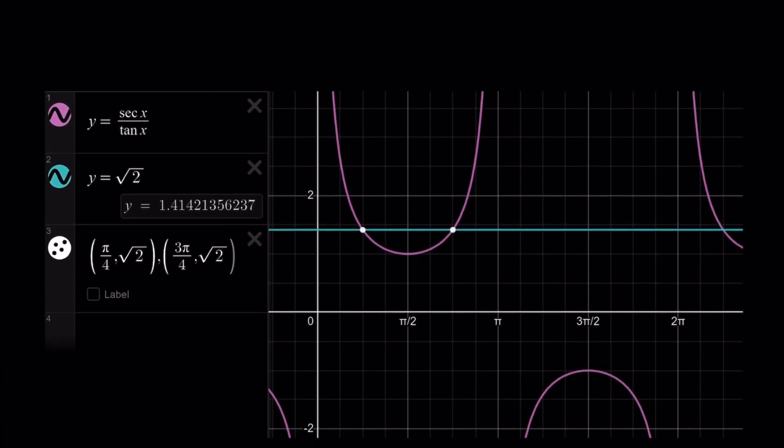Okay, so I graphed secant over tangent and its intersection with the horizontal line y equals square root of 2. And as you can see here, there are two solutions, and these are going to be the points that they intersect at. So this is pi over 4, and this is 5 pi over 4. Of course, after 2 pi, it's just going to repeat.